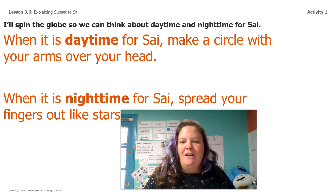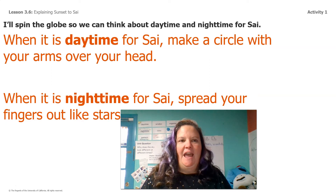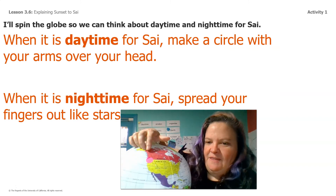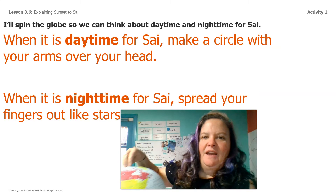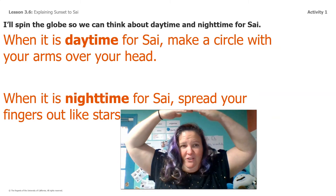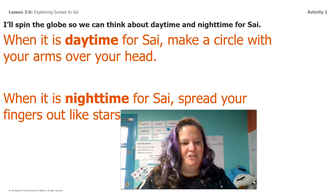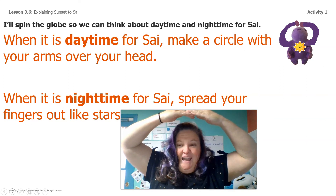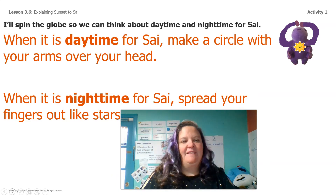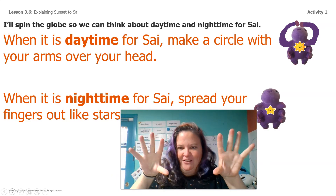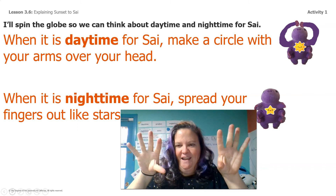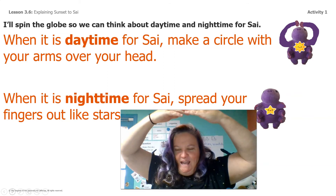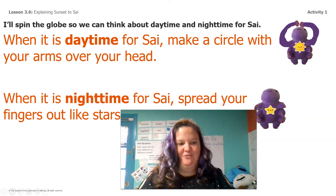We're gonna go back out onto our daytime and nighttime chart, and I'm gonna spin the globe, and you're gonna pay really close attention to that pink sticker. When it's daytime for Sai, I want you to make a circle with your arms over your head, just like Lavender does here, to show it's daytime. And when it's nighttime for Sai, I want you to spread your fingers out like stars. Pay really close attention to when it's daytime for Sai and when it's nighttime for Sai.